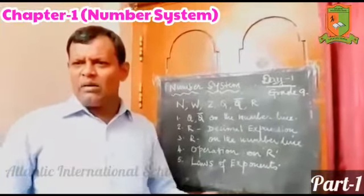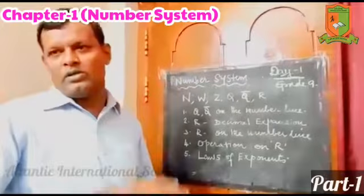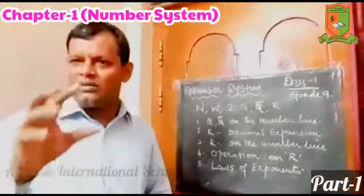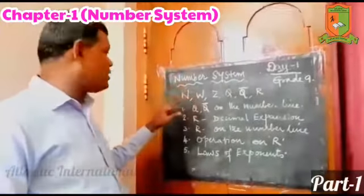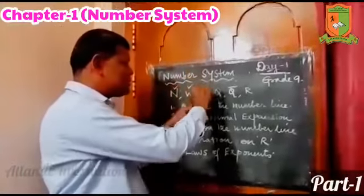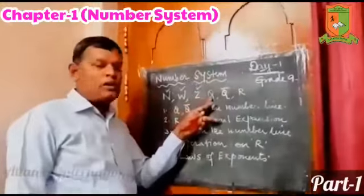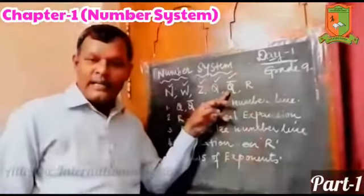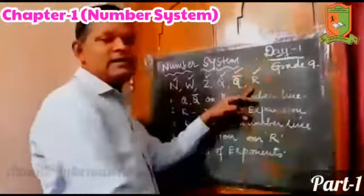The normal basic numbers — their formation, their operation, their representation — all these are called a number system. In the number system, basically we have got natural numbers, whole numbers, integers, then Q is rational number, Q dash is irrational number, and R is a real number.